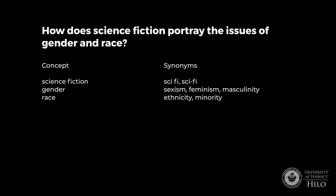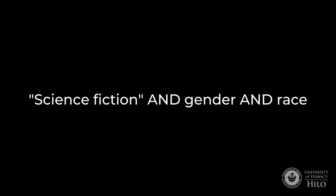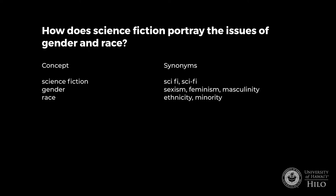Now think about combining your search terms into a more effective search. Pause this video for a moment and decide what keywords you want to combine with AND. Did you create a search like this? Science fiction AND gender AND race. Next, consider your list of synonyms to join with OR — pause this video for a moment and figure out how to combine those.